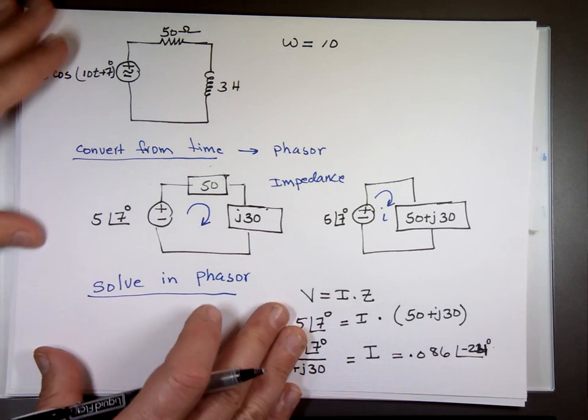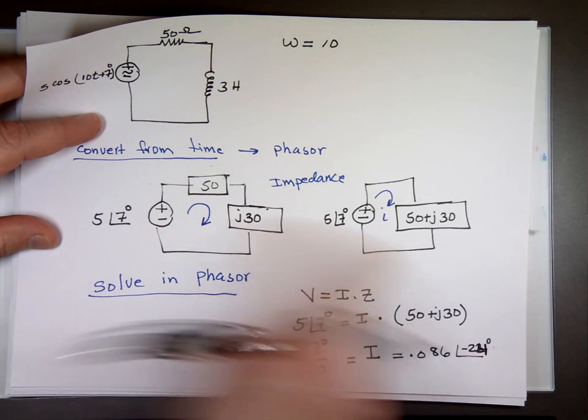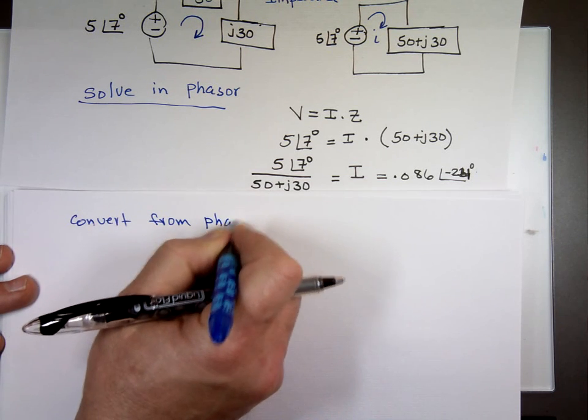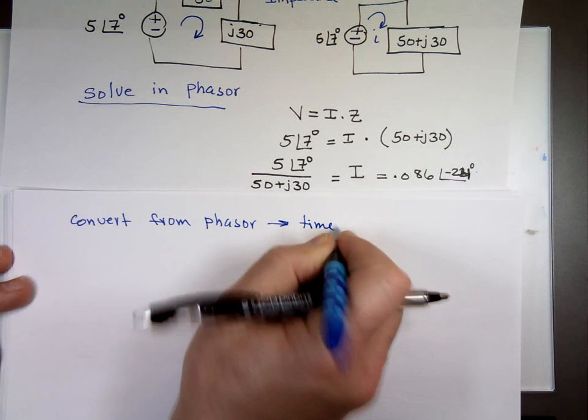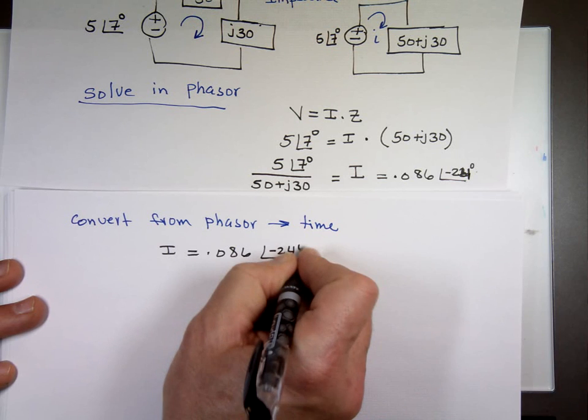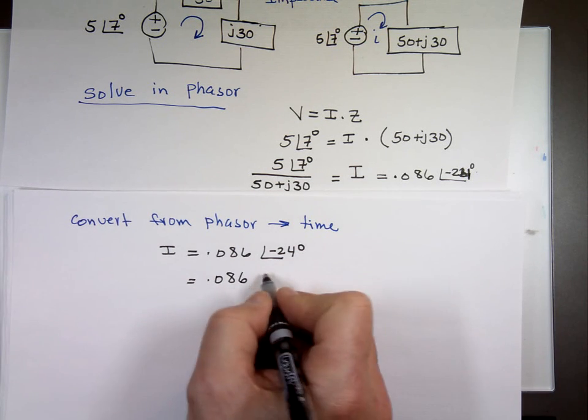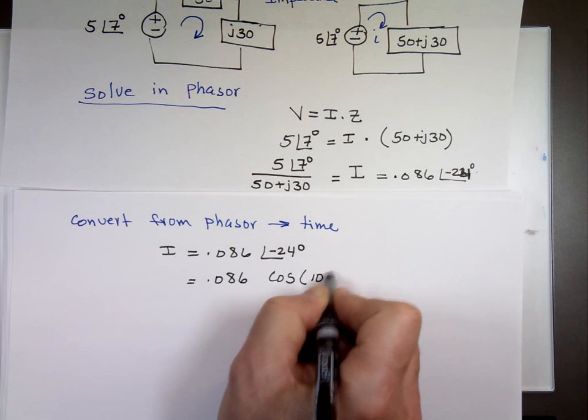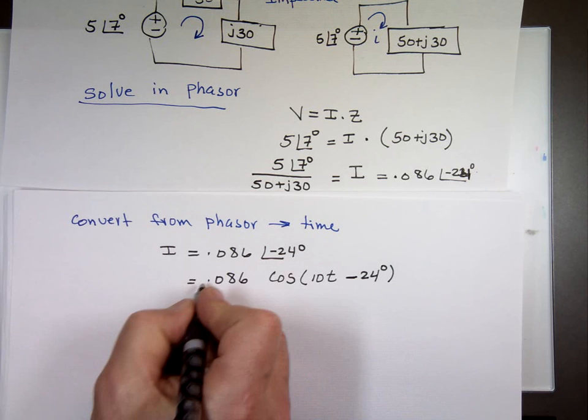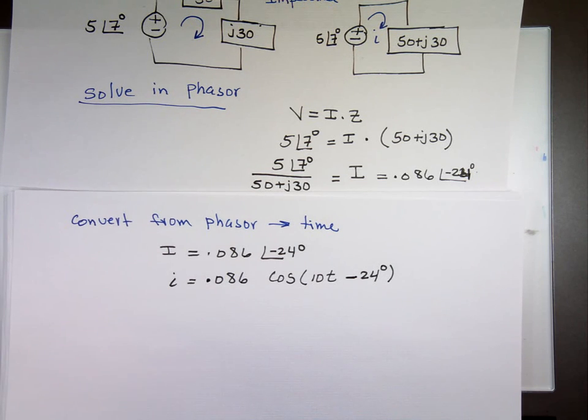See how quick? Now convert to phasor. It's not that difficult. Solve in phasor, just like it was simple resistors. And now the next step is step number three. Convert from phasor to time. We know the current in phasor is 0.086 angle negative 24 degrees. That becomes 0.086. We had a cosine in the problem. ω was 10t. Stays the same. But now I have a phase shift of negative 24 degrees. And we use lowercase because that's in time domain. That's in phasor. So that's how we approach these problems. Instead of solving them in time domain, it's a lot quicker and easier to solve them in phasor.